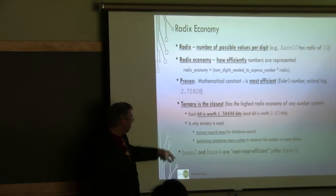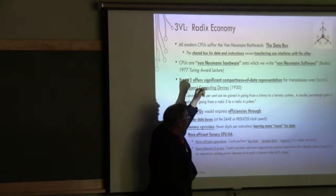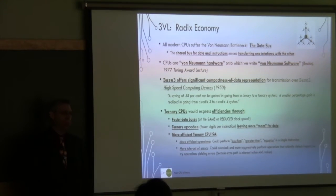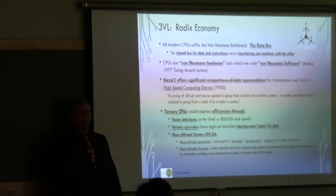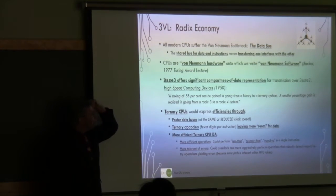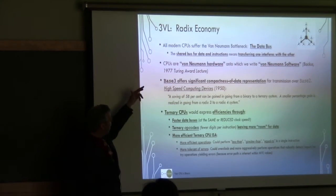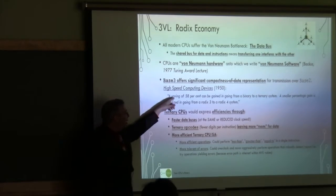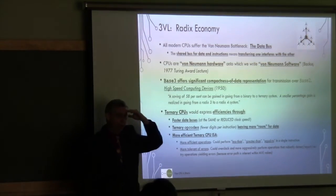Base 2 and base 4 are pretty close; base 2 isn't bad. But the 3VL radix economy offers a lot. The von Neumann bottleneck is essentially the data bus — if I have one CPU needing data and instructions from the same bus, and some tasks are compute-intensive while others are data-intensive, that's the bottleneck. Backus wrote a really good paper on this in 1977, kicking off a lot of the functional programming movement. Base 3 offers a lot of compactness — research for the U.S. Navy in the 50s found they could save 58% by going from binary to ternary on data throughput.